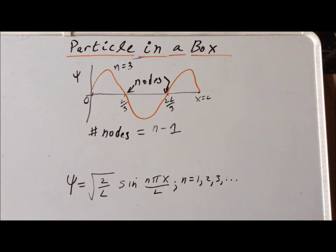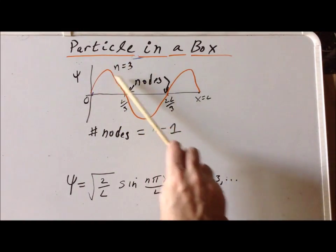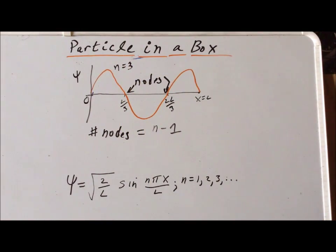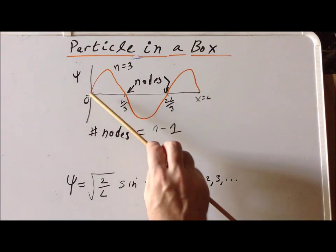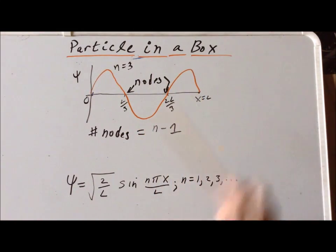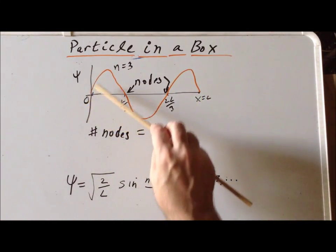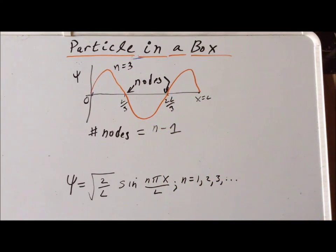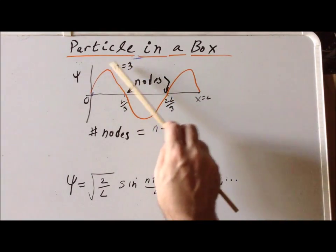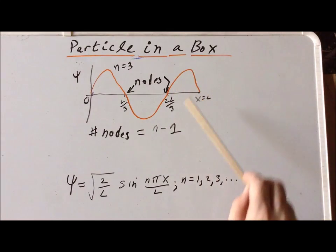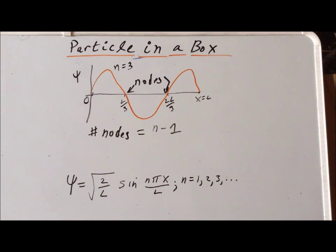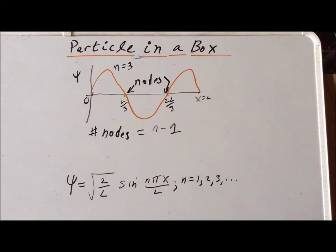We notice a pattern: when n equals 1 we had no nodes, when n equals 2 we had one node, and when n equals 3 we have two nodes. So the number of nodes is n minus 1. Similarly, the number of half waves equals the principal quantum number n — one half wave for n equals 1, a full wave (two half waves) for n equals 2, and three half waves for n equals 3. Continuing this pattern, we can generate the wave function for any value of n.